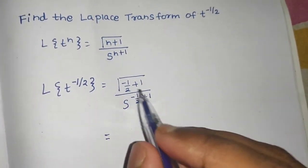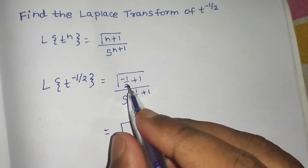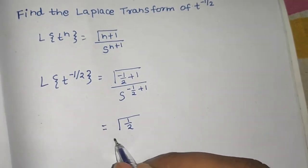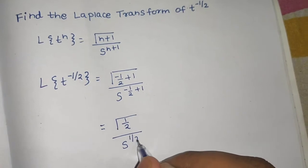So this will be gamma of minus half plus 1 is positive half, divided by s power half.